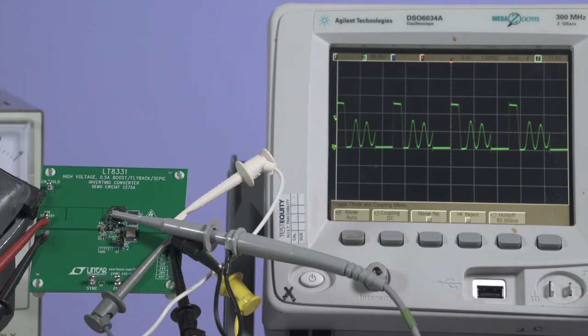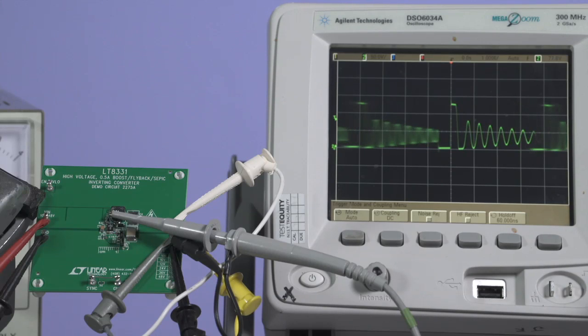It has the ability to run in different modes. Like the LT8330, it has burst mode operation but can also run in pulse skipping mode or be synchronized to an external clock. While both LT8330 and LT8331 can be used with all the topologies, the LT8331 can be used for flyback converters as well.